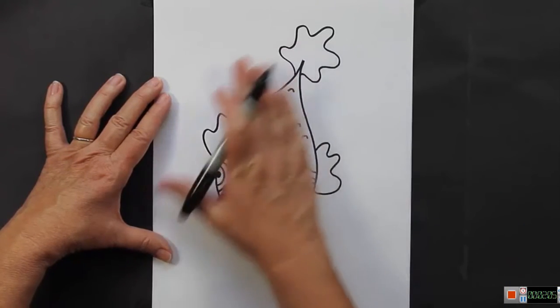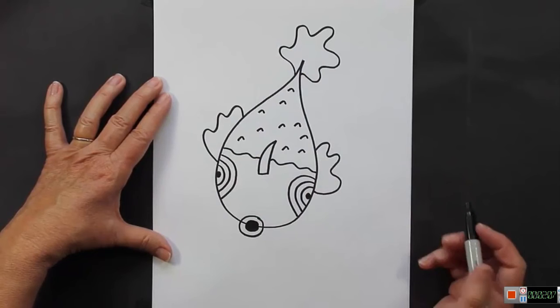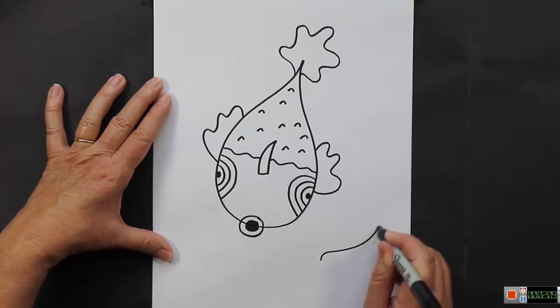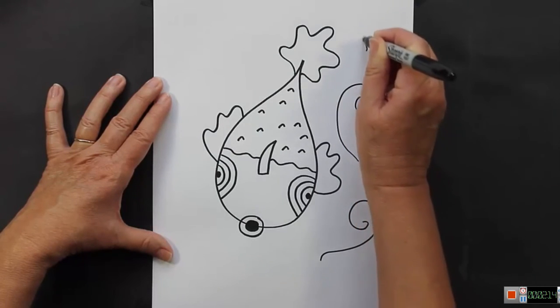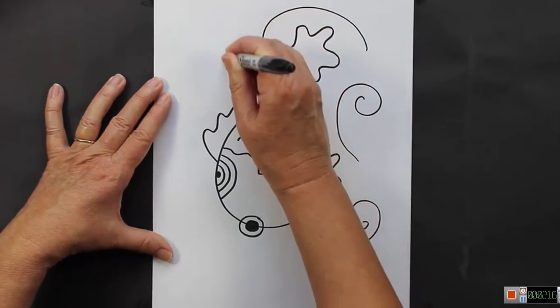Now what you can do, because the koi is in some water, you can make some swirls going around to represent water. I always like to do that when I am creating water.